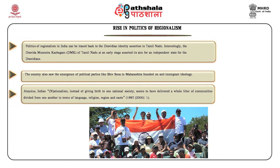The early 1980s also witnessed the emergence of some new political parties such as Telugu Desam Party in Andhra Pradesh and Asom Gana Parishad in Assam, asserting regional aspirations against the alleged domination of the central government. Gradually the country also saw the emergence of political parties like Shiv Sena in Maharashtra, founded on anti-immigrant ideology, as Indians from one region have moved in far greater numbers to another region. Such anti-immigrant ideology has spread to various other parts of India in recent times, posing questions about one Indian identity for all its citizens and the nation building exercise of the Indian nation. As Aloysius puts it, Indian nationalism instead of giving birth to one national society seems to have delivered a whole litter of communities divided from one another in terms of language, religion, region and caste.